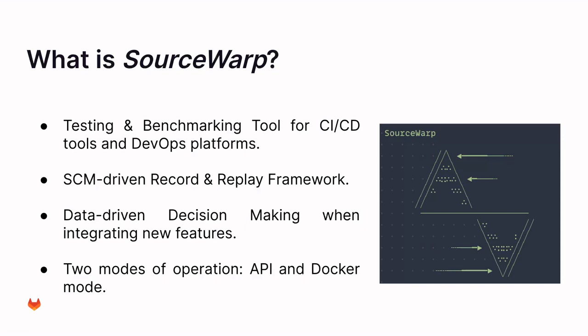SourceWarp will look through the git commit history, and will try to extract those commit results that match the constraints that you define. Then it will sample a set of patches, which are then replayed on the target system. That makes SourceWarp a good testing tool for data-driven decision-making, because you can record and replay slices from the git history.